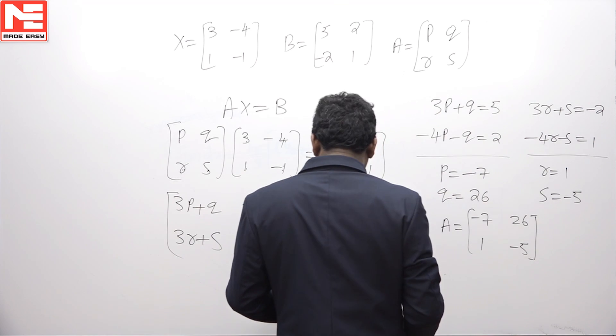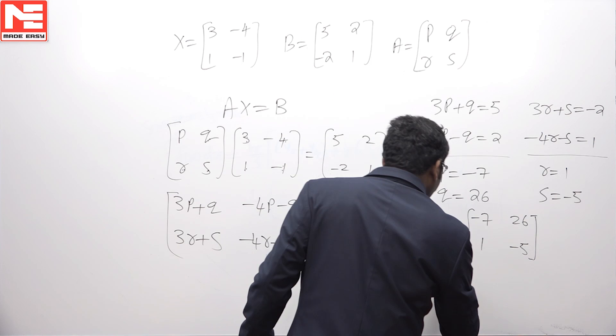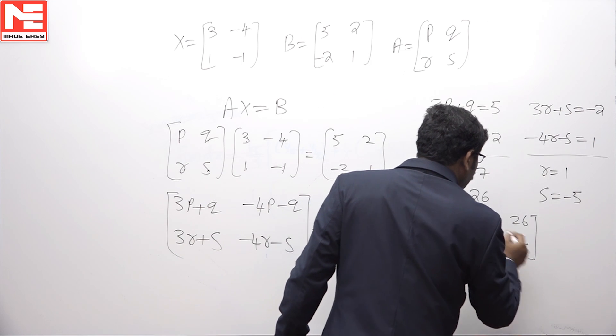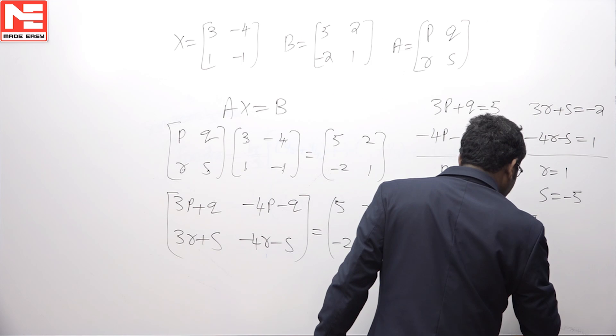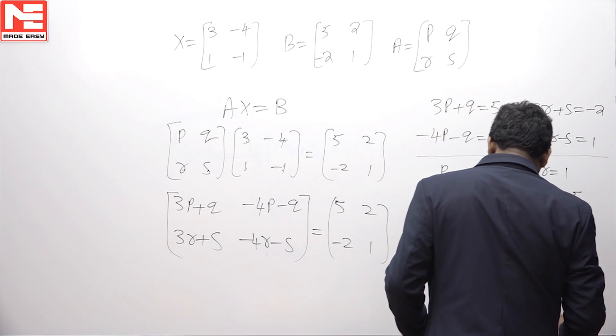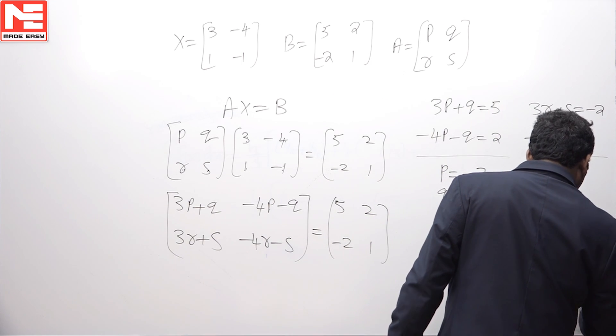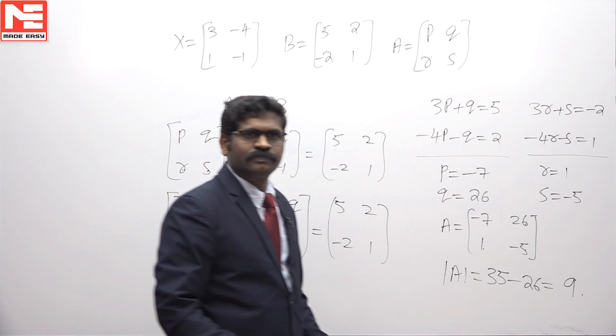Now, determinant value of A is 35 minus 26, that is 9. Thank you very much.